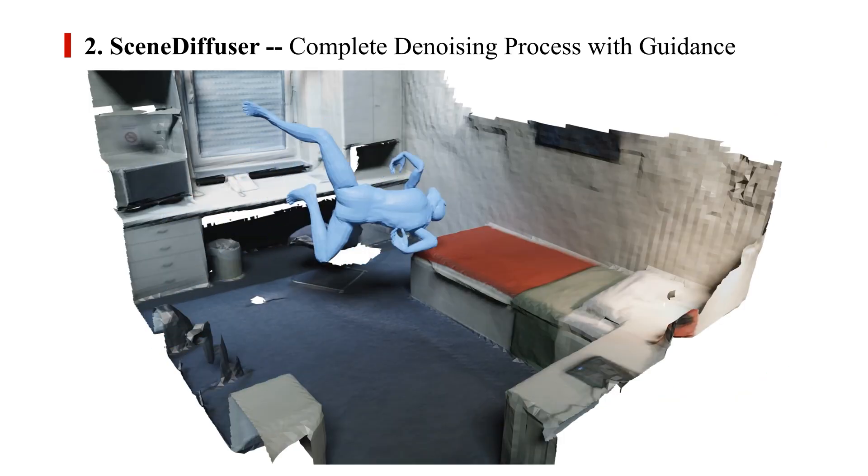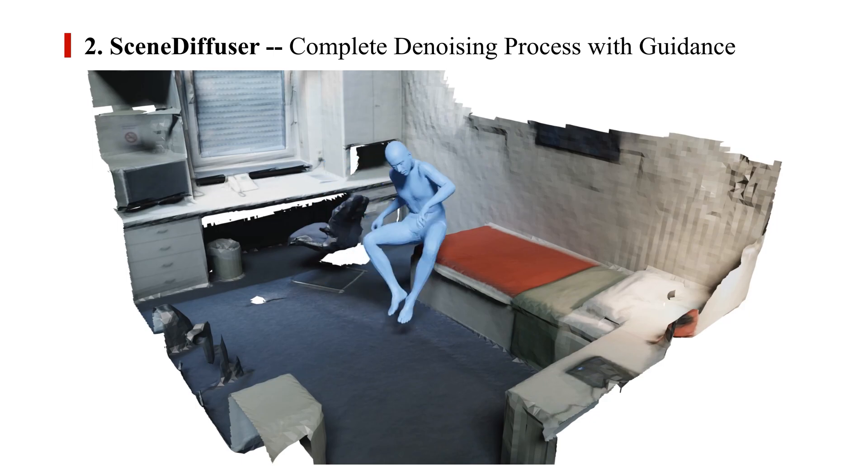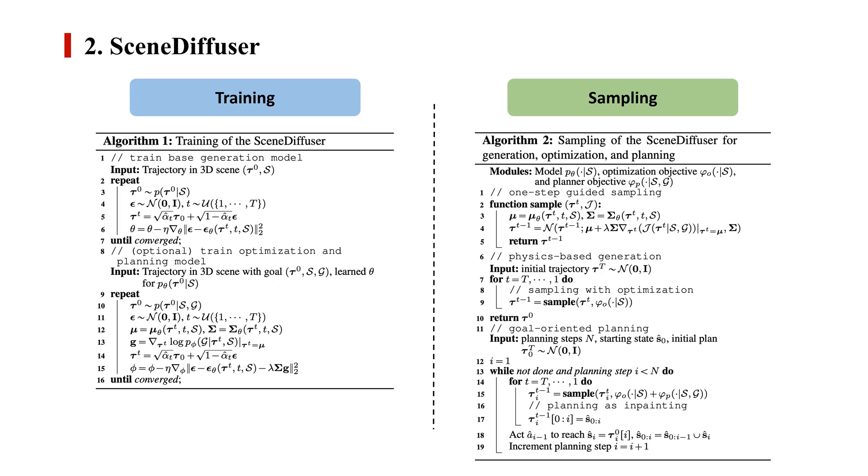We visualize an example of the complete denoising process with guidance in this slide. Algorithm 1 summarizes the training procedure, and we also extend the training process to learning guidance from observed trajectories. Algorithm 2 summarizes the detailed sampling process, including both optimization and planning guided sampling.